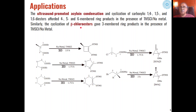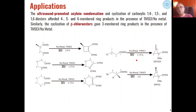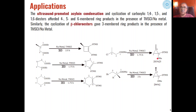Beta-chloro esters can also be converted into 3-membered ring products under the same conditions as acyloin condensation. Instead of using diesters, beta-chloro esters are used as the starting material and the same type of acyloin condensation can take place to give 3-membered ring compounds.